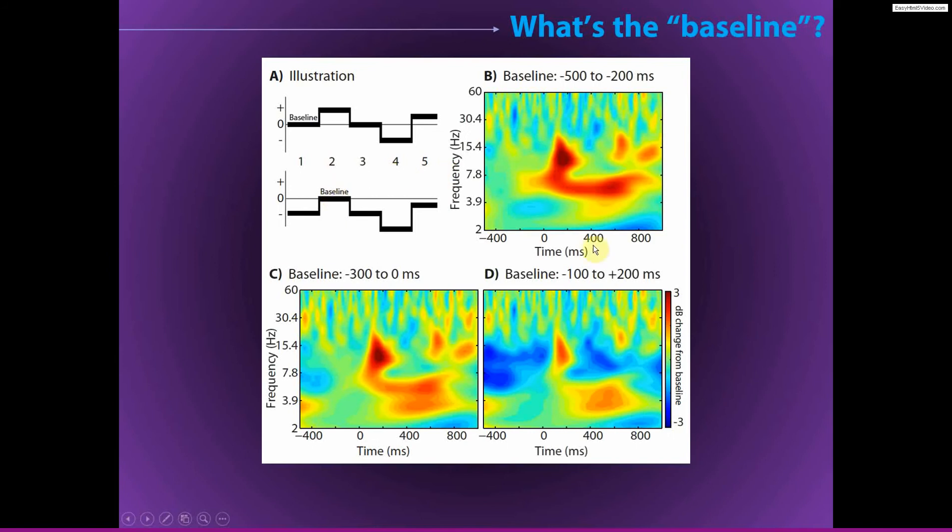Here I have some examples of the same data, same electrodes, same analyses. The only difference amongst these three plots is which time period I used for the baseline normalization. And we will reproduce this figure in MATLAB in a few minutes. So here you can see I used a baseline period of minus 500 milliseconds to minus 200, so that's from here to here. This one is minus 300 to zero, and this one is minus 100 to plus 200.